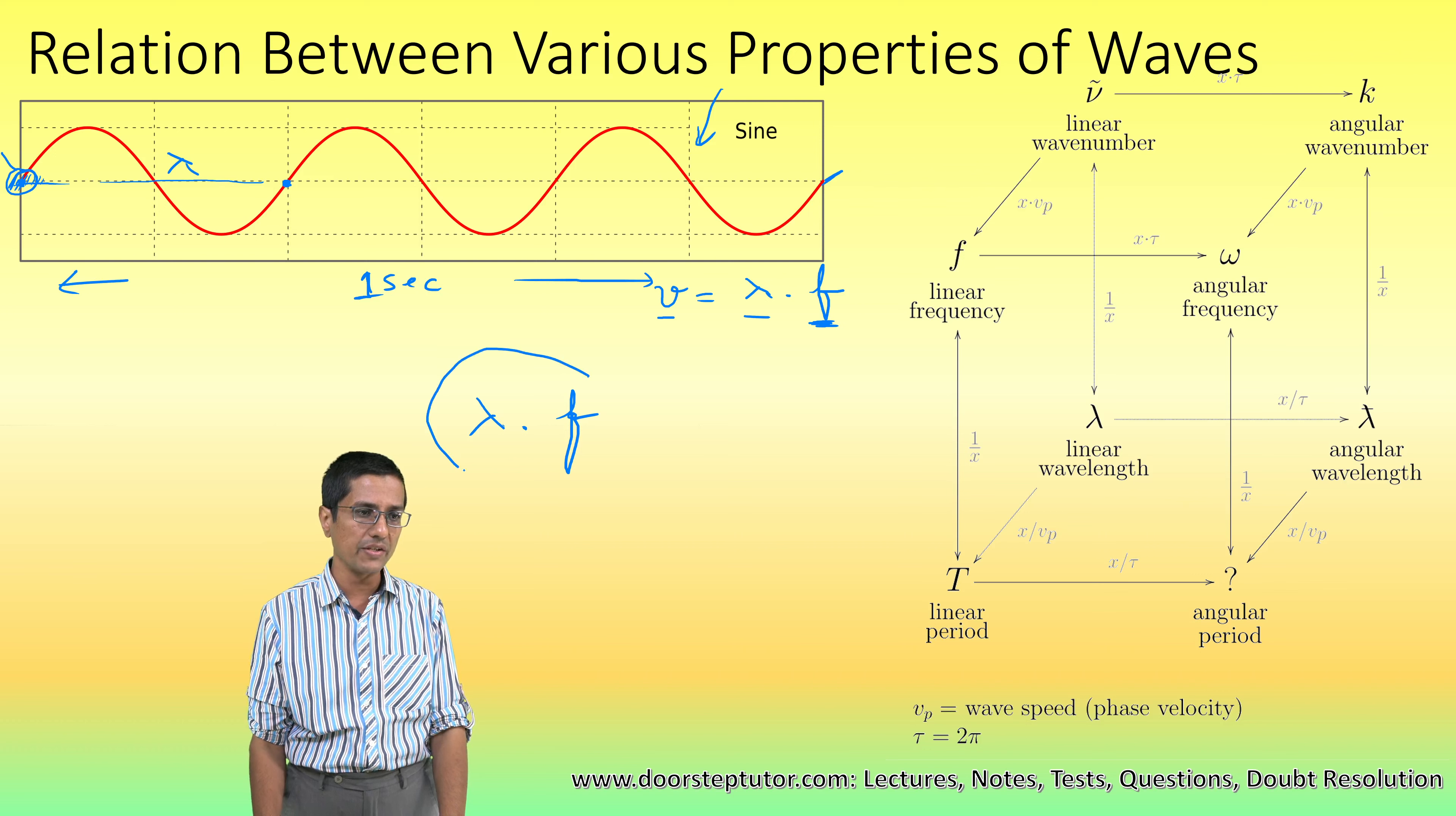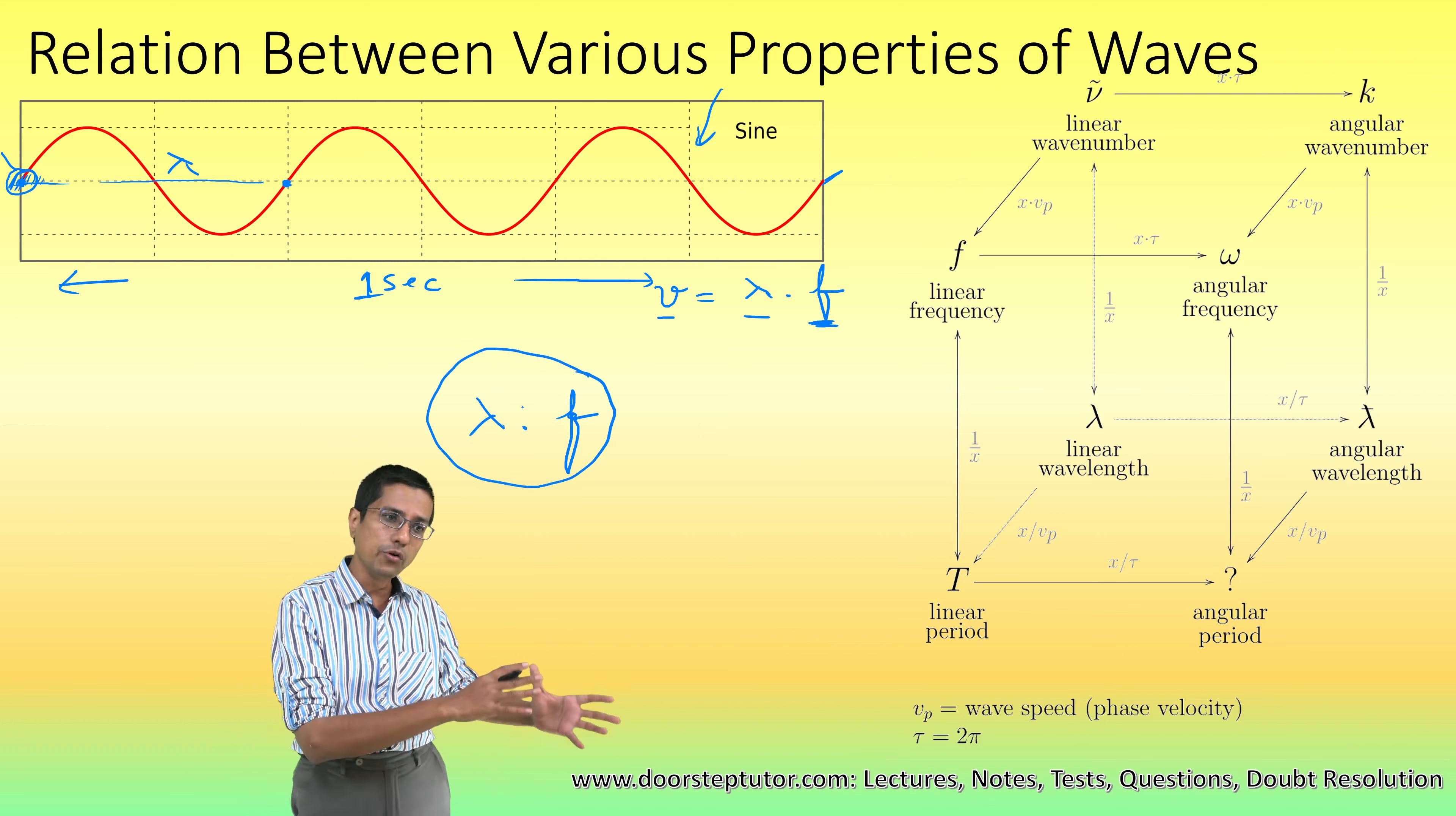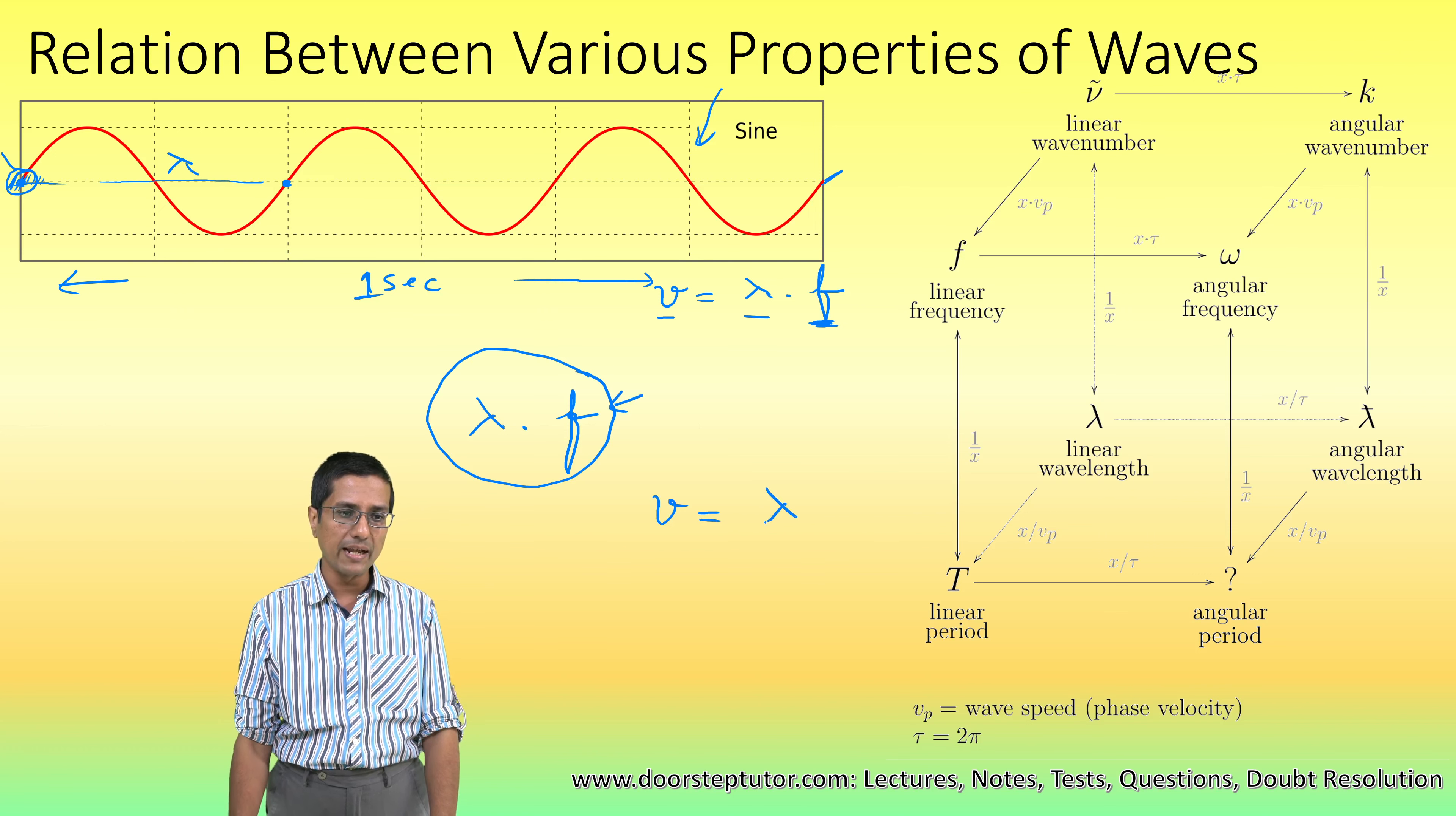In one second my old wave would have to move this much for the new wave to take its place, and therefore the speed of the wave has to be equal to lambda into f.